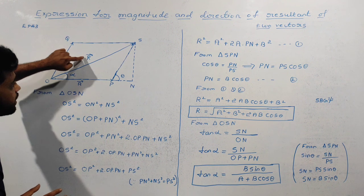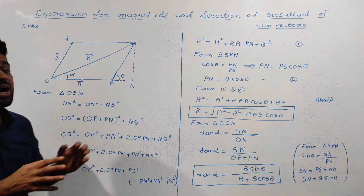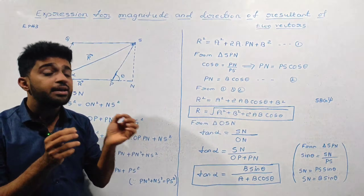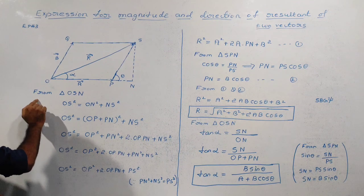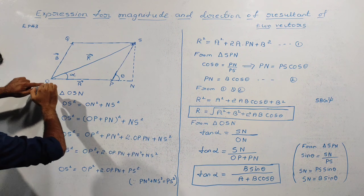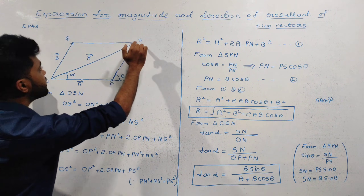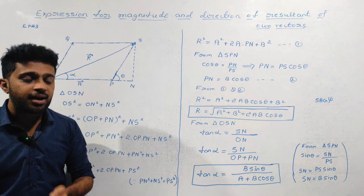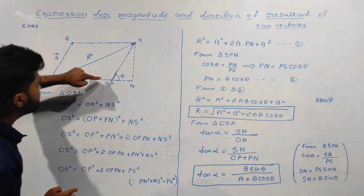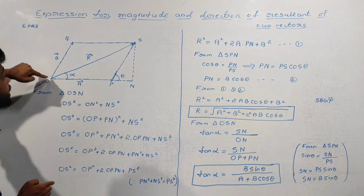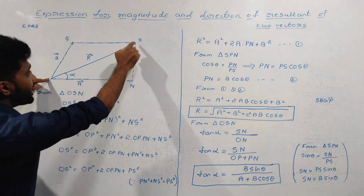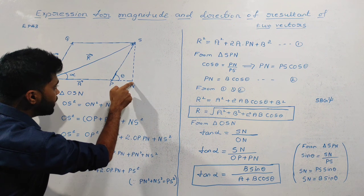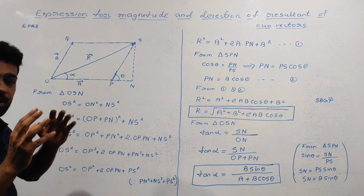Vector R has both magnitude and direction as given by the expression. To write the derivation, we apply the Pythagorean theorem to the right-angle triangle OSN: OS squared is equal to ON squared plus NS squared.